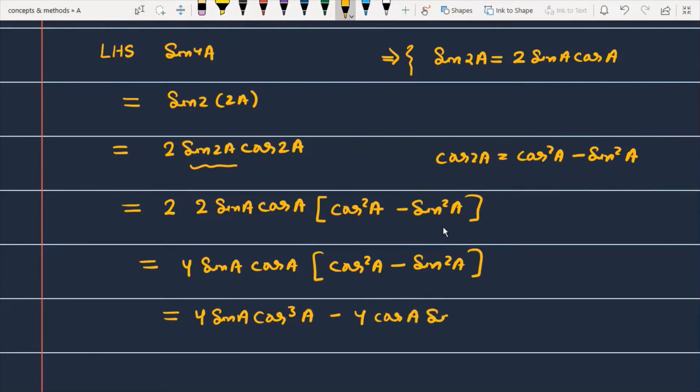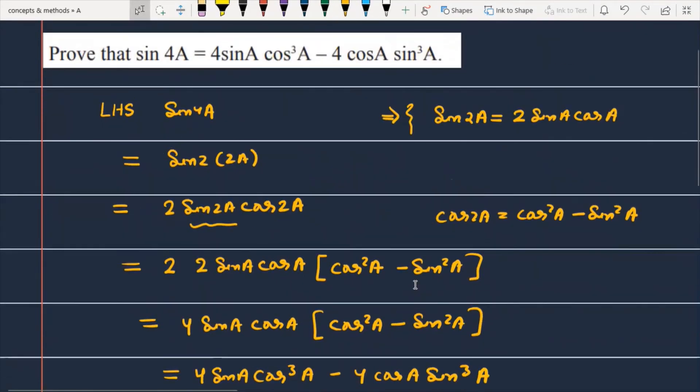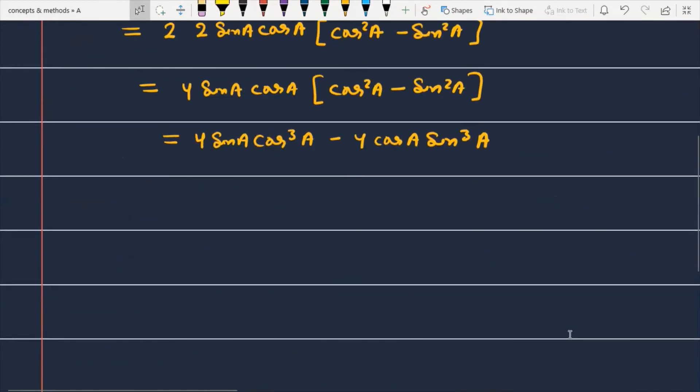After this, 4 cos A into sin 2A. Finally we can write that sin 4A is equal to 4 sin A into cos cube A minus 4 cos A into sin cube A, and this is the part which we have to prove in the question.